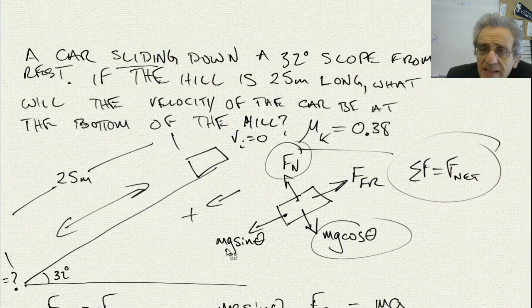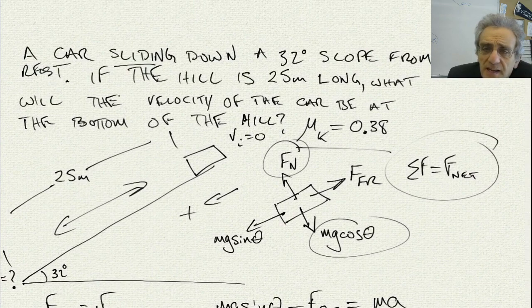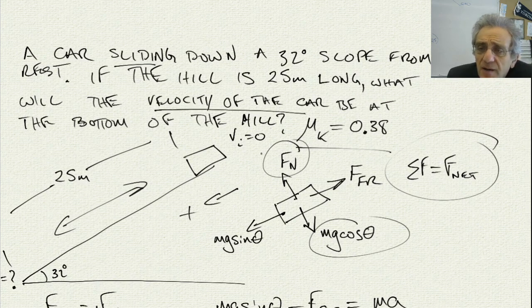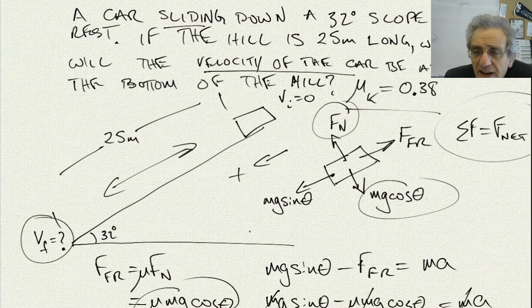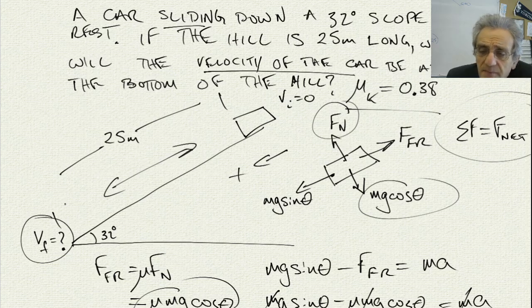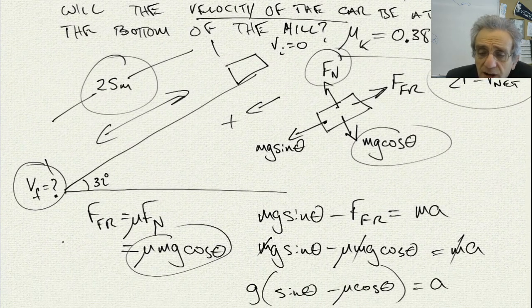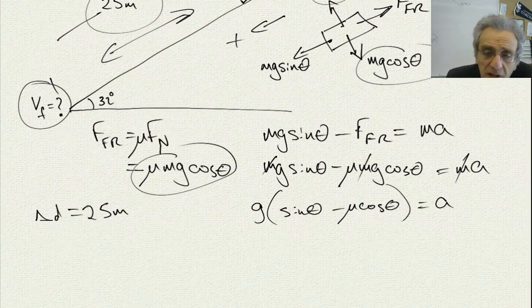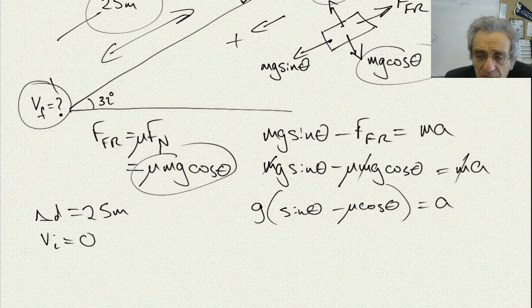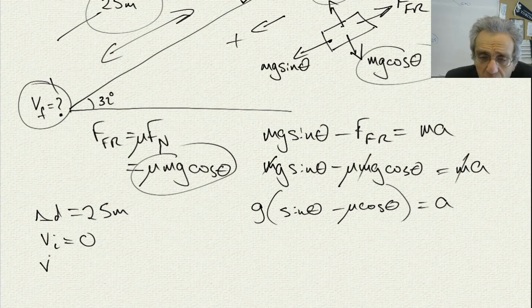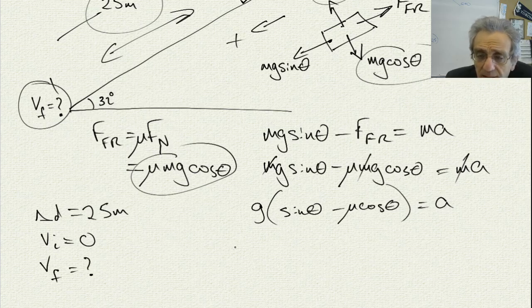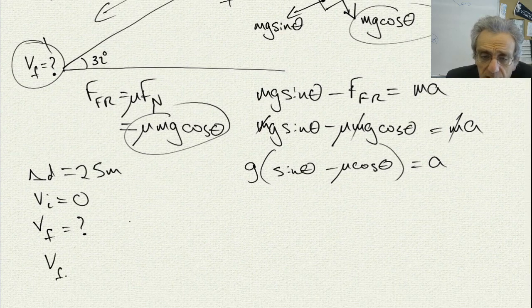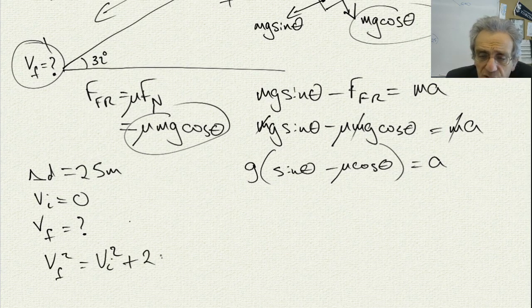Now, the problem is not actually asking for A. The problem is saying, what will the velocity of the car be? It's actually asking for the final velocity. But in order to get that final velocity, we need the acceleration. The other thing we're given is the delta D that the car travels. So we know delta D is equal to 25 meters. We know that the initial velocity is zero. We now can calculate the acceleration. And we're looking for the final velocity. So we know which equation this is, there's only one equation that's going to work here. V final squared is equal to V initial squared plus 2A delta D.